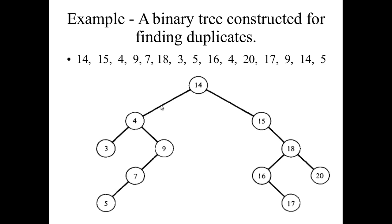When a duplicate is found it will not be written again. Then 20: greater than 14, greater than 15, greater than 18, so it is placed on the right side of 18. Then 17: greater than 14, greater than 15, lesser than 18, so it comes to the left side of 18; greater than 16, so it comes to the right side. Then 70: compared and found greater, placed accordingly. Then 9 is found as a duplicate. Then 14 is also found as a duplicate, being equal to the root.